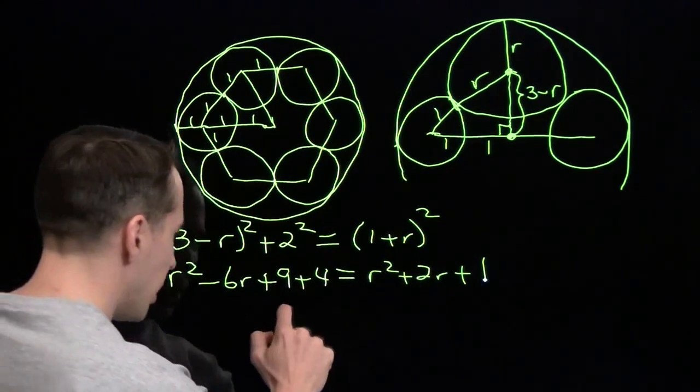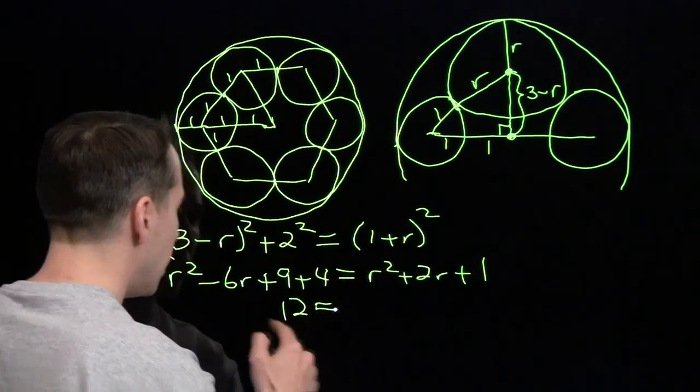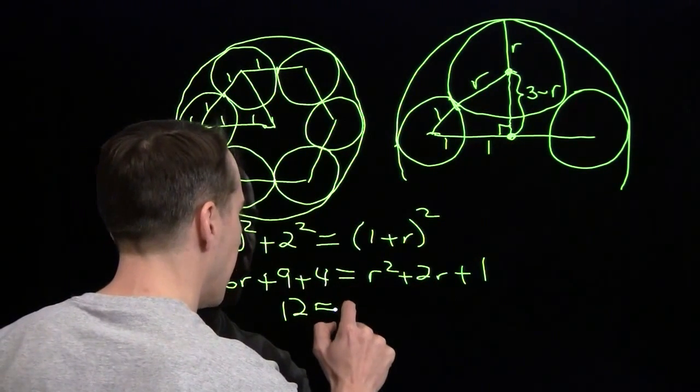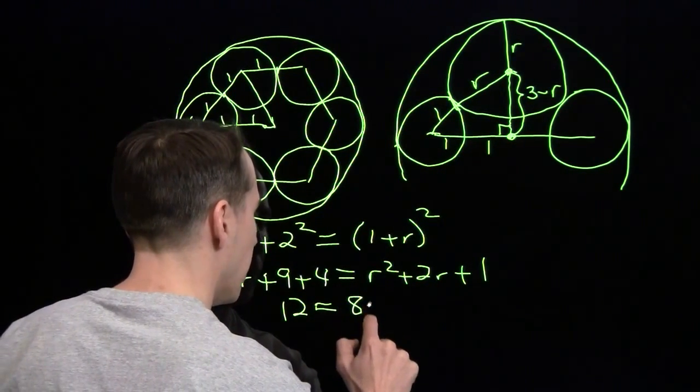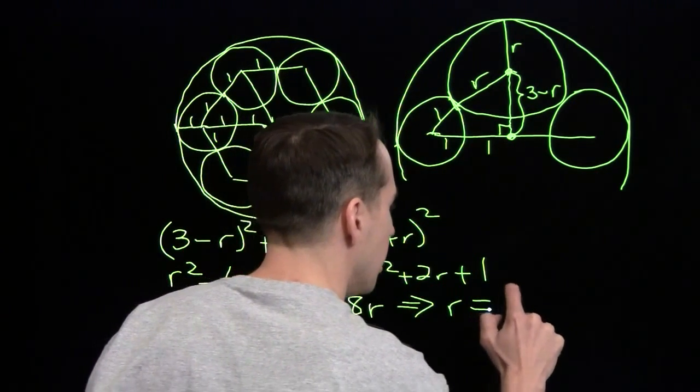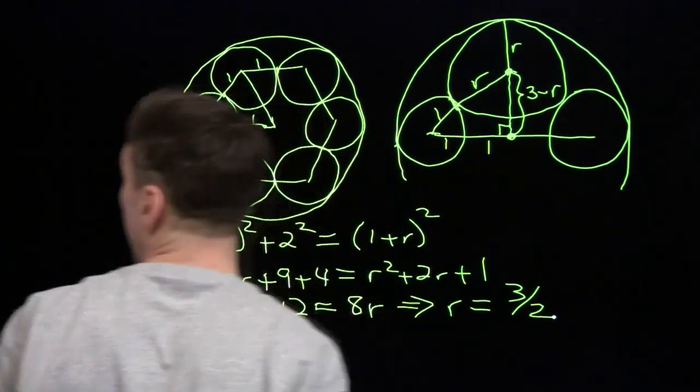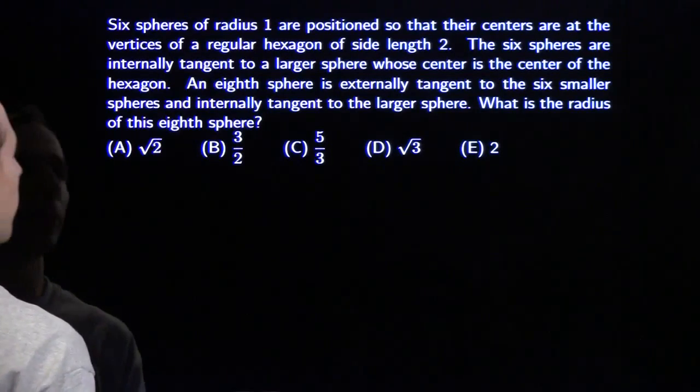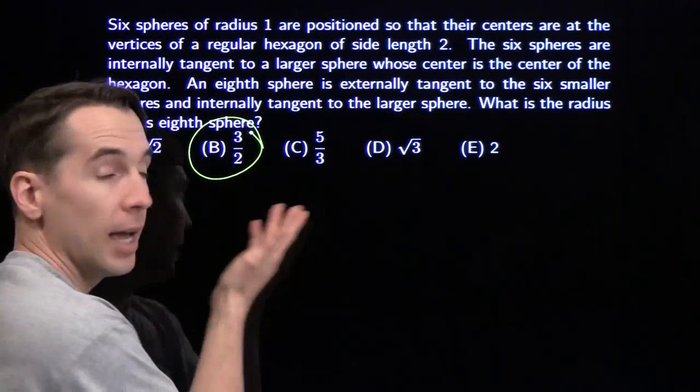Bring the 1 over here, and it's 13 minus 1 is 12. Add the 6r over there. We have 12 = 8r, and that gives us r = 3/2. We go back to the problem. We find the 3/2, and we're done.